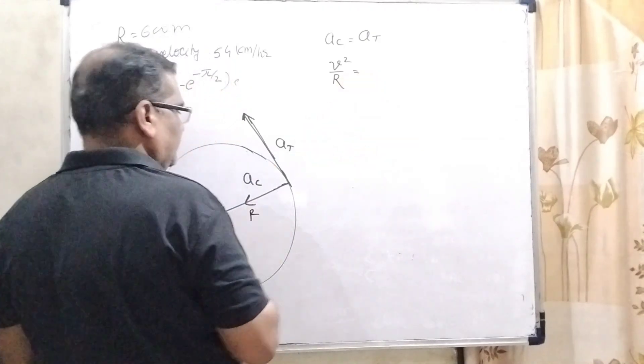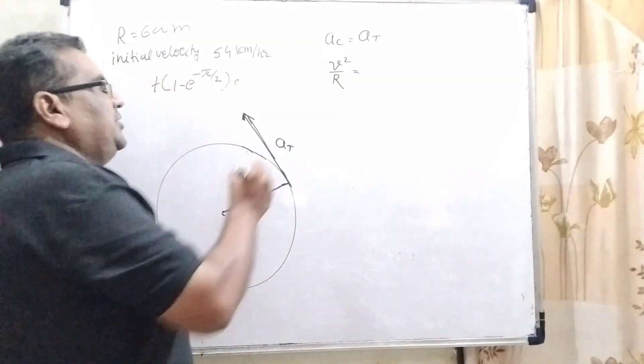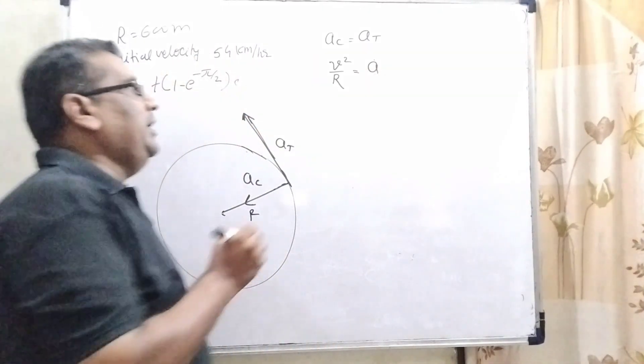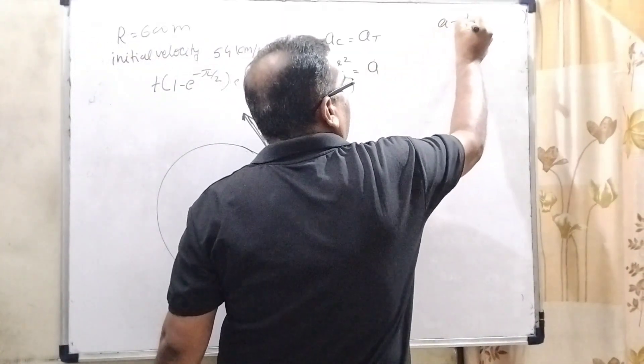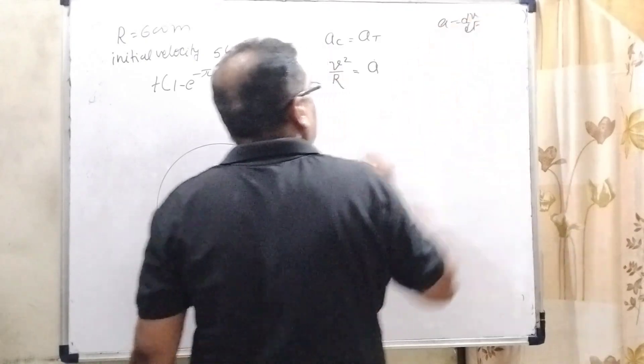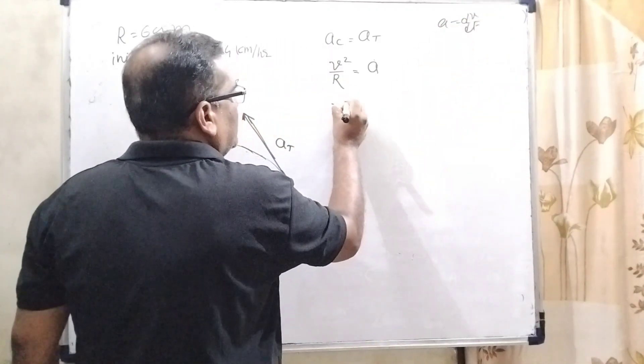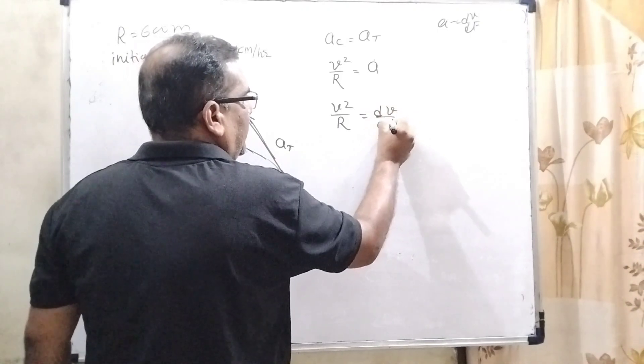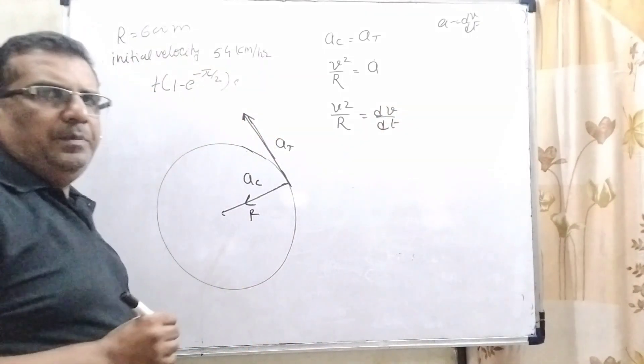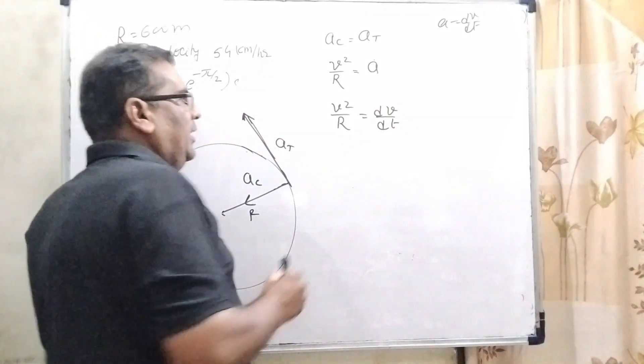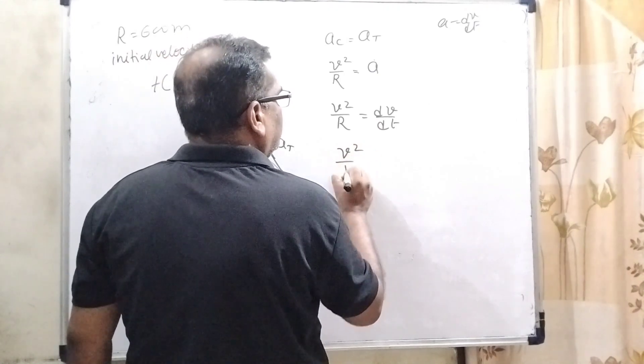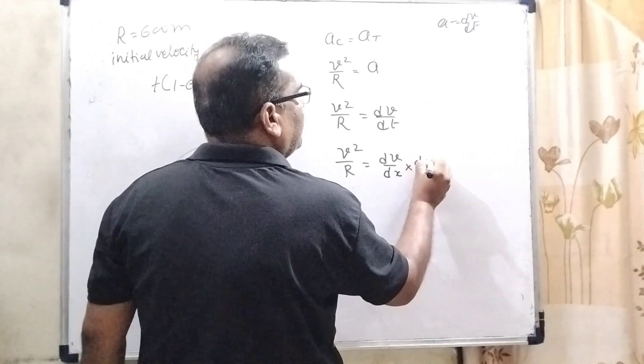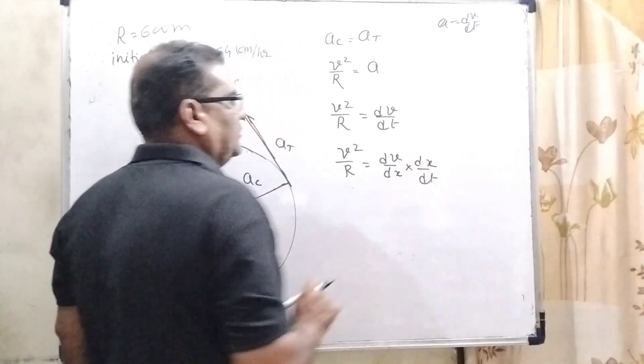According to the question, centripetal acceleration and tangential acceleration are equal. As we know, centripetal acceleration is v²/r, where r is the radius. And tangential acceleration is a, which can be written as dv/dt. So v²/r = dv/dt. By using the chain rule, it can be written as (dv/dx)(dx/dt).